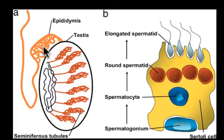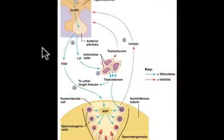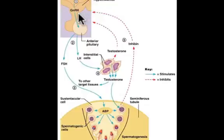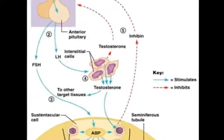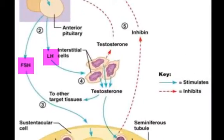As they mature, sperm are stored in the epididymis awaiting ejaculation. The male hormonal control of gametogenesis starts in the hypothalamus, which secretes gonadotropin-releasing hormone (GnRH). This stimulates the anterior pituitary to secrete two hormones: LH (luteinizing hormone) and FSH (follicle-stimulating hormone).